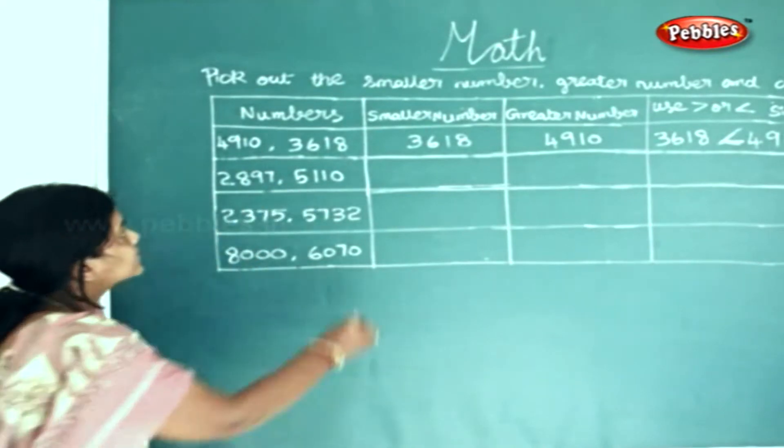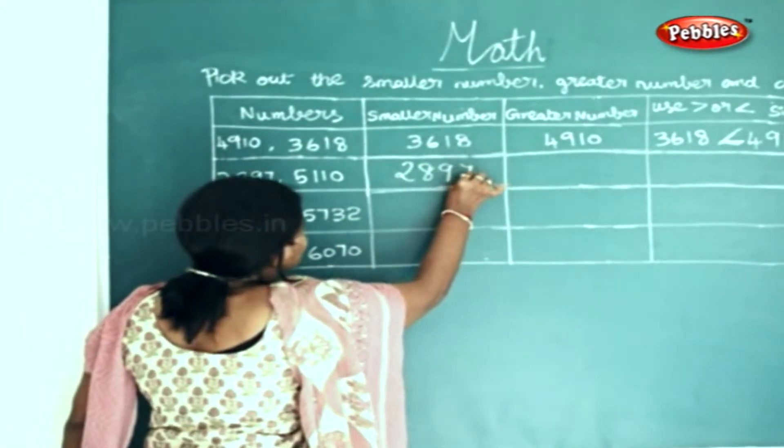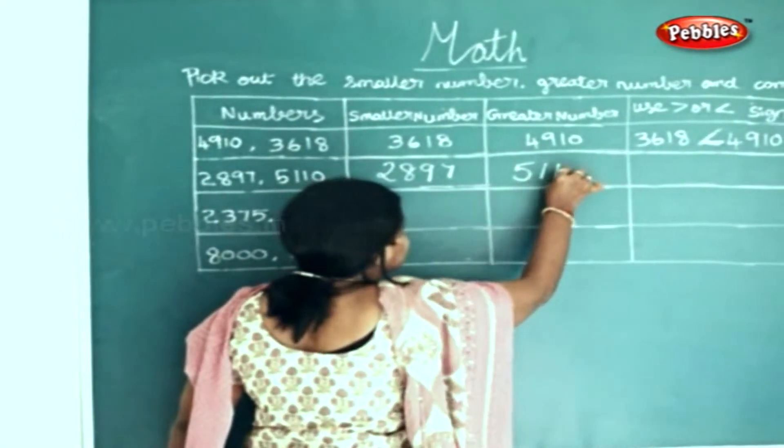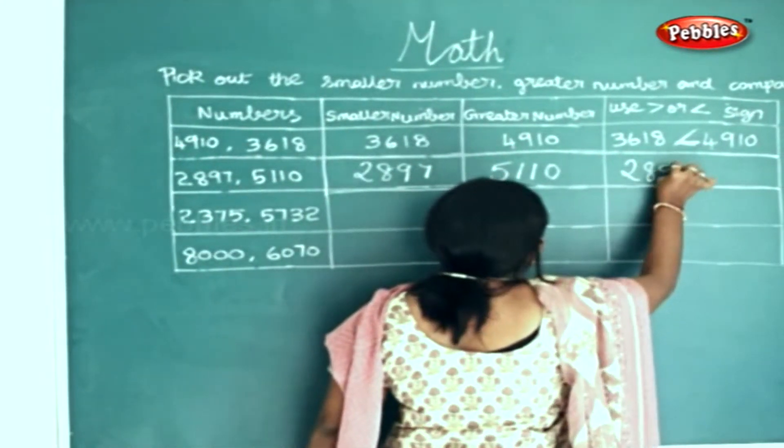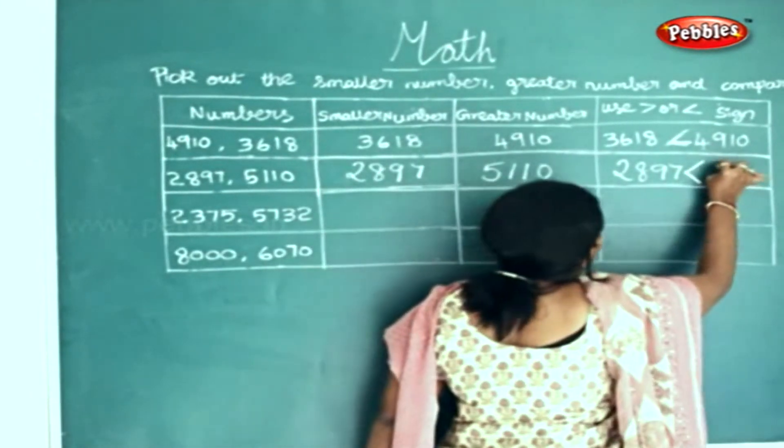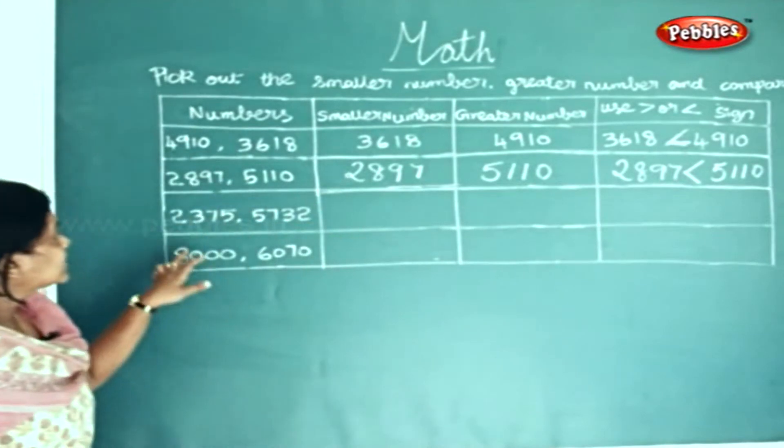In these two numbers, 2897 is the smaller number and 5110 is the greater number. So 2897 is smaller than 5110.